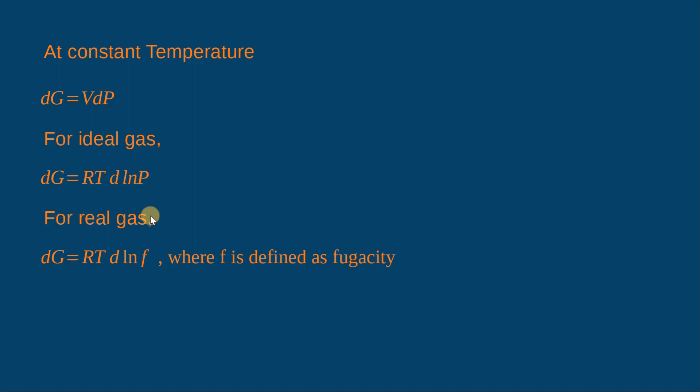For a real gas, by logic we write dG = RT d(ln f), where f is defined as fugacity. Fugacity is a mathematical concept introduced in thermodynamics and it has units of pressure.